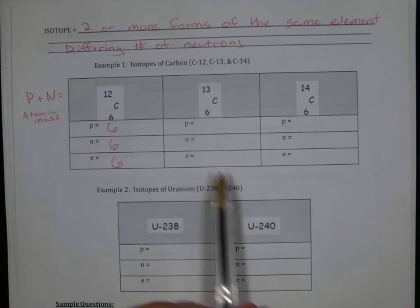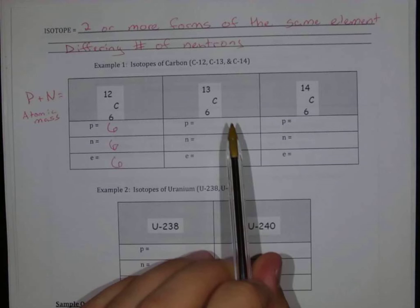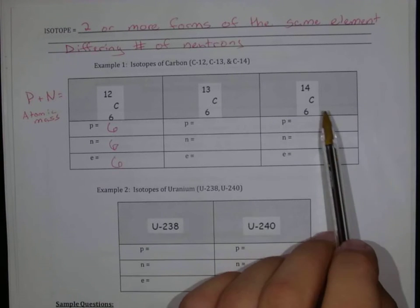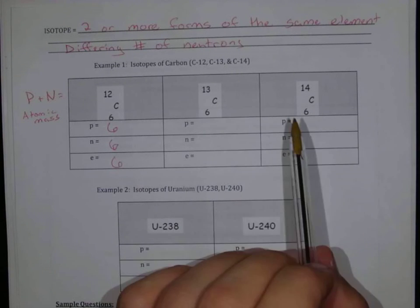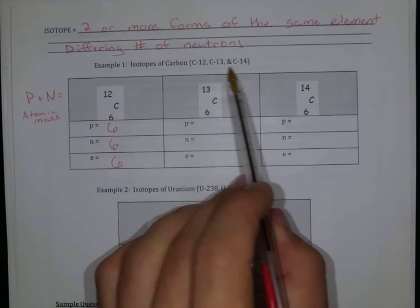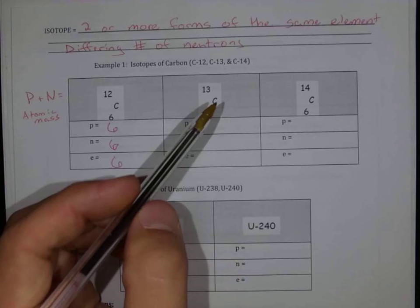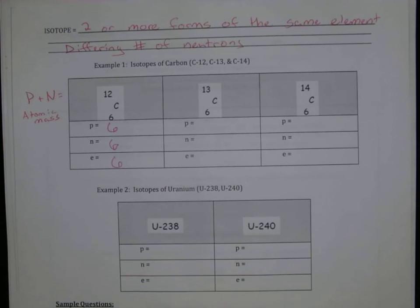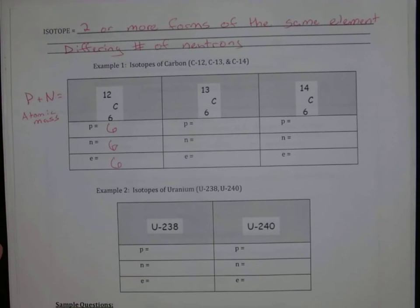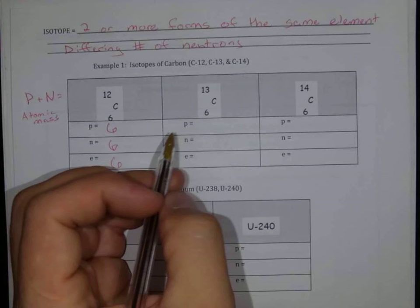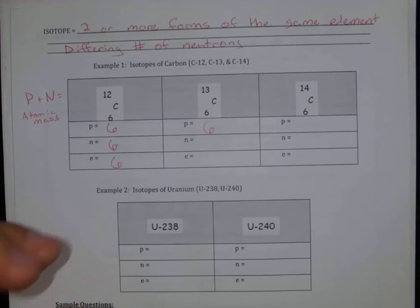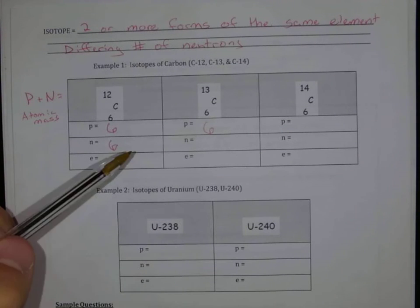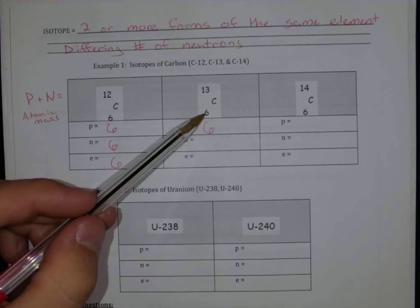We started out with carbon-12, which is one isotope for carbon, but we also have carbon-13 and carbon-14. This is how we kind of normally would write it, and then this is our symbol form. And so what we can see is that, again, we have six protons because we have a carbon atom. It's always going to be six protons if it's a carbon atom because the atomic number is six.